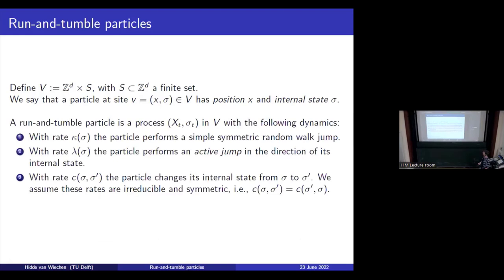What is the dynamics of this particle? It has three different kinds of dynamics. The first is simple symmetric random walk jumps — we include these because this is a model of particles potentially colliding with one another. But of course we also add the active jumps with weight lambda_sigma, so it depends on the layer what the rate will be. It will jump in the direction of its internal state — for example, if we are on Z and the internal state is 1, then the active jumps will jump to the right.